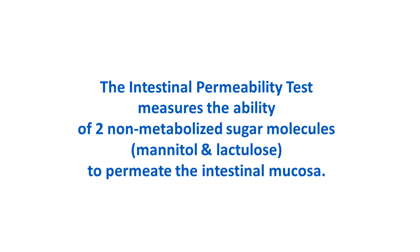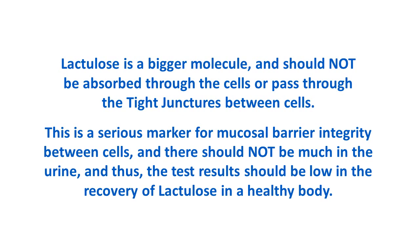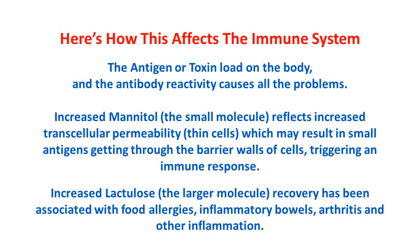This particular intestinal permeability test measures the ability of two non-metabolized sugar molecules — mannitol and lactulose — to permeate the intestinal mucosa. In a healthy gut, small molecules like glucose and mannitol permeate or diffuse through the cells. So in this urine test, a healthy body should allow these molecules to permeate or diffuse. In contrast, lactulose is a bigger molecule and should not be absorbed through the cells or pass through the tight junctions between cells. The test results should show low recovery of lactulose in a healthy body. Here is how this affects the immune system.